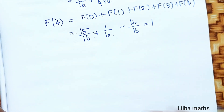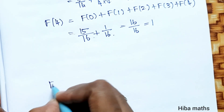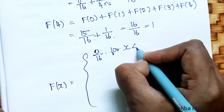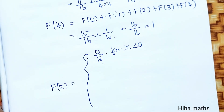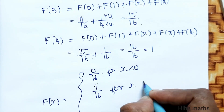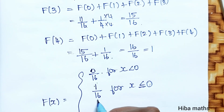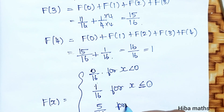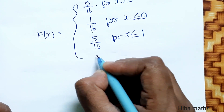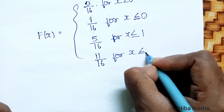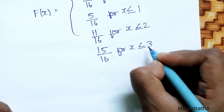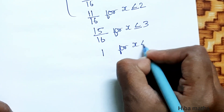So the Cumulative Distribution Function F(x) is defined as: 0 for x < 0; 1/16 for 0 ≤ x < 1; 5/16 for 1 ≤ x < 2; 11/16 for 2 ≤ x < 3; 15/16 for 3 ≤ x < 4; and 1 for x ≤ 4.